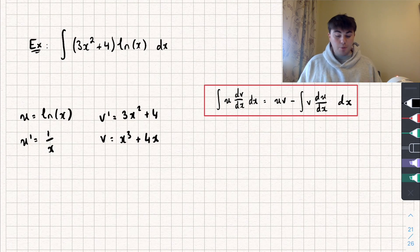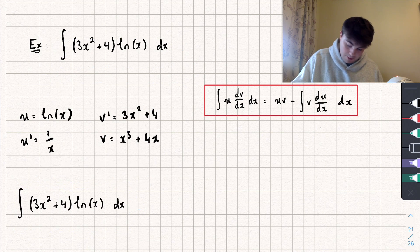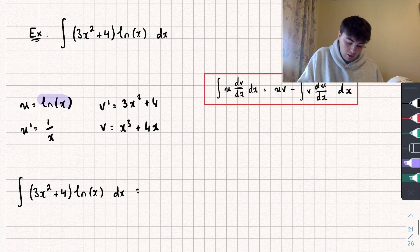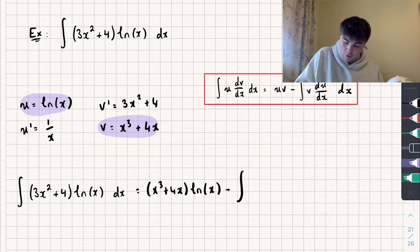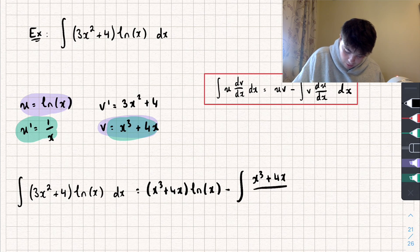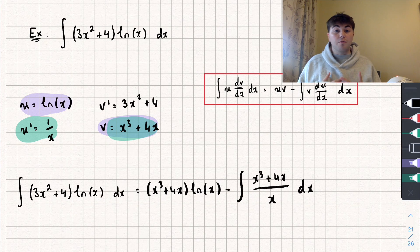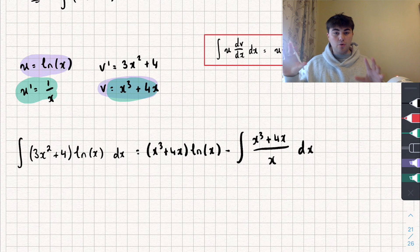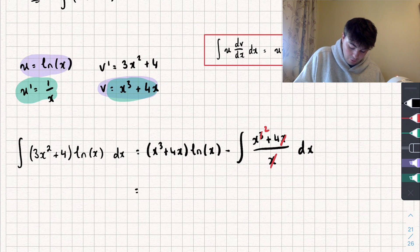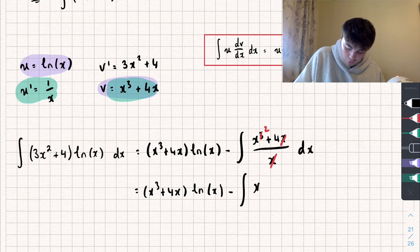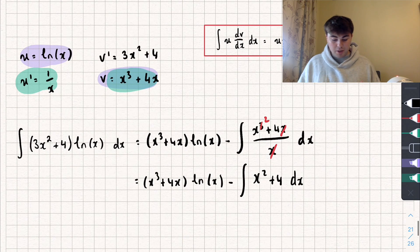Now we can use our integration by parts formula to rewrite this integral. That's going to be equal to u times v — so x cubed plus 4x multiplied by the natural log of x — subtract the integral of v multiplied by u', which is x cubed plus 4x all divided by x, integrated with respect to x. Because both terms on the numerator contain x and we have x on the denominator, those cancel, leaving us with x cubed plus 4x times the natural log of x, subtract the integral of x squared plus 4 with respect to x — and that's pretty easy to integrate.